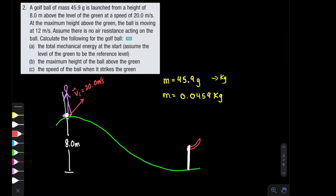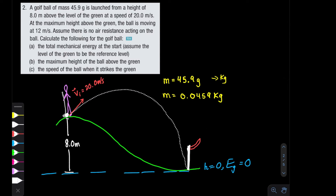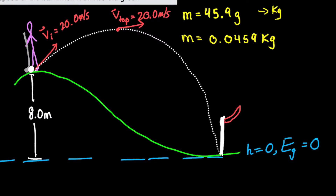We set up our coordinate system so the lowest height is the reference level — height equals zero. That's our zero potential line, since potential energy will be zero at ground level. If we follow the trajectory of the golf ball, at the maximum height the velocity is 12 meters per second directed horizontally. The vertical velocity at the top is momentarily zero — that's the maximum point — but the horizontal component continues moving to the right, which is why the velocity at the top is horizontal only.